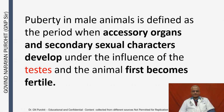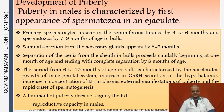Puberty in male animals is defined as the period when accessory organs and secondary sexual characters develop in the male under the influence of the testes, and the animal first becomes fertile. Puberty in males is characterized by the first appearance of spermatozoa in an ejaculate. Primary spermatocytes appear in the seminiferous tubules by four to six months and spermatozoa by seven to nine months of age in bulls. Seminal secretion from the accessory glands appears by five to six months, and separation of the penis from the sheath in bulls begins at one month of age.